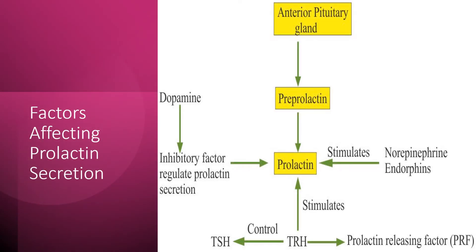Factors that promote prolactin secretion include: prolactin releasing factor (PRF), thyroid releasing hormone (TRH), pregnancy, estrogen therapy, breastfeeding, sleep, stress, angiotensin II, oxytocin, dopamine antagonists, serotonin, and opioids. All of these promote prolactin secretion and play an important role in stimulating prolactin hormone release.